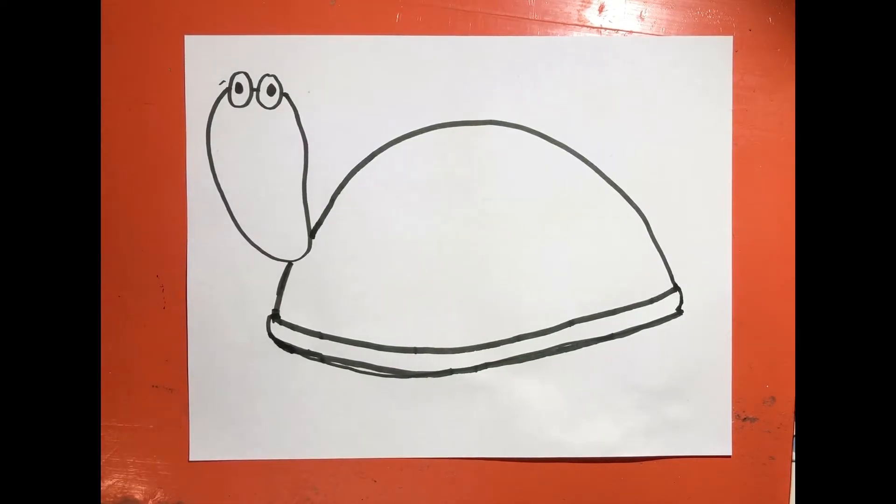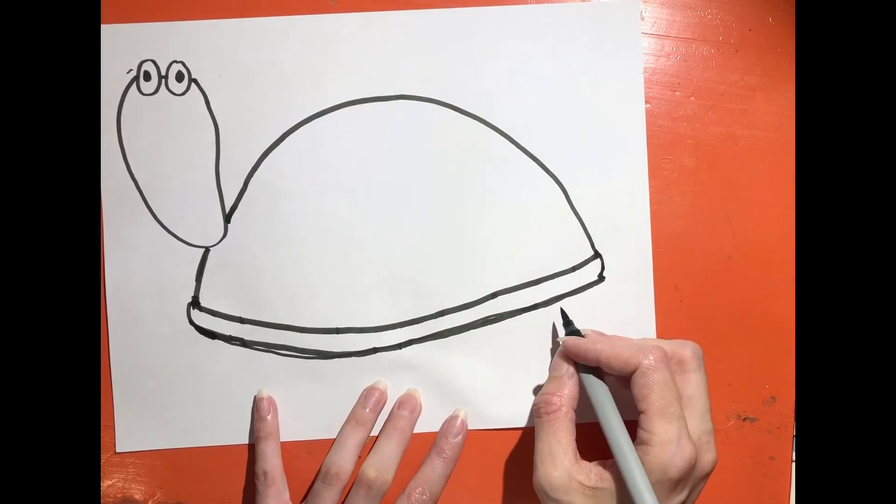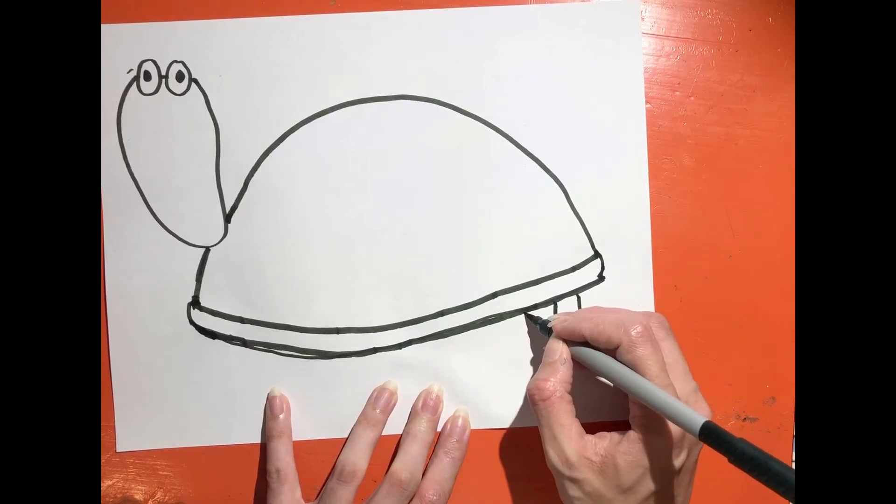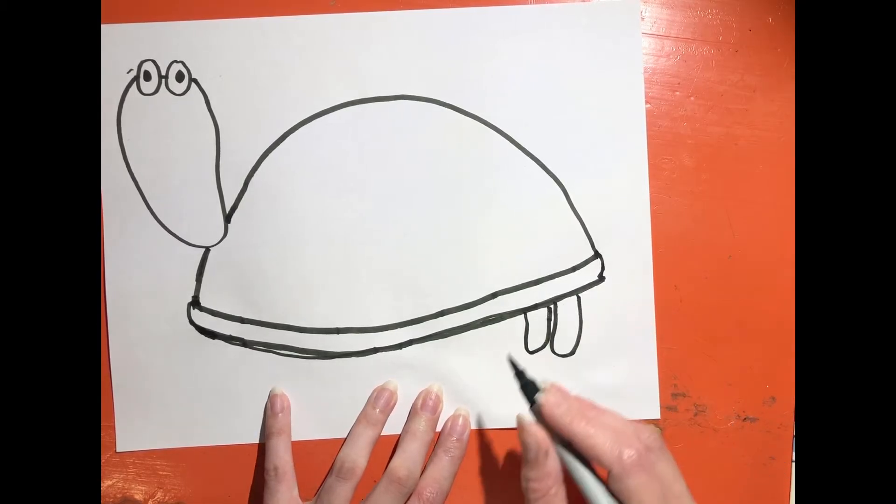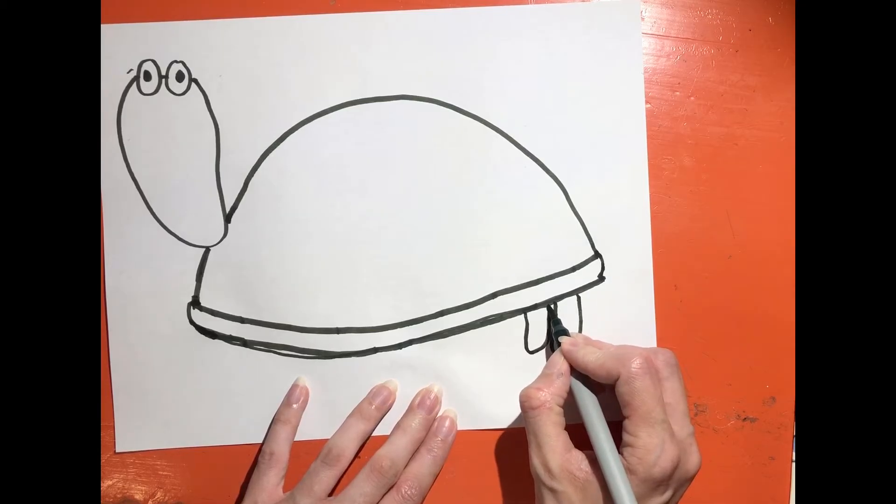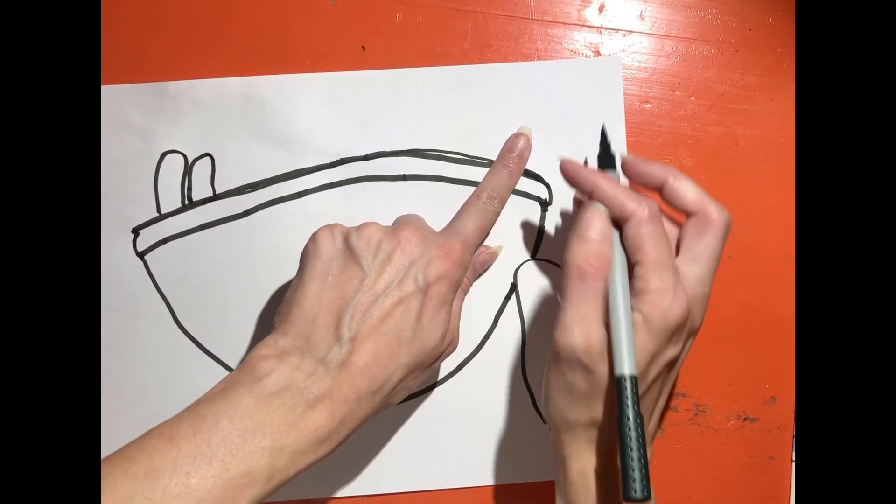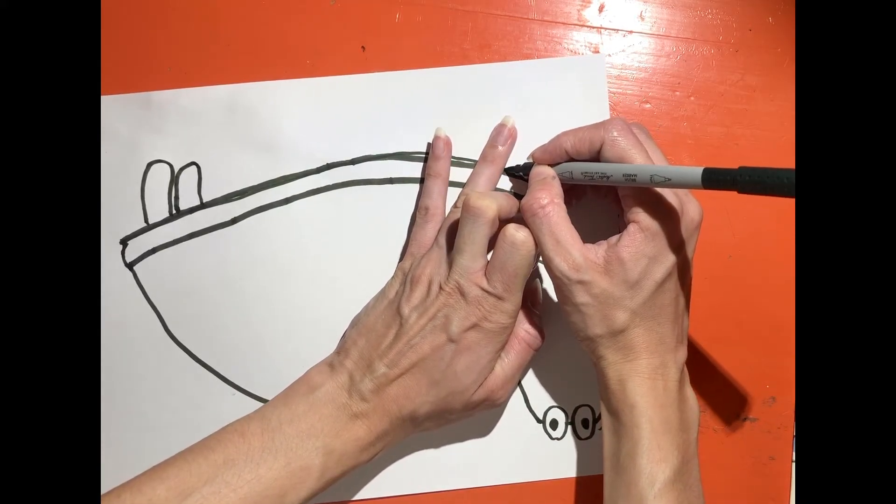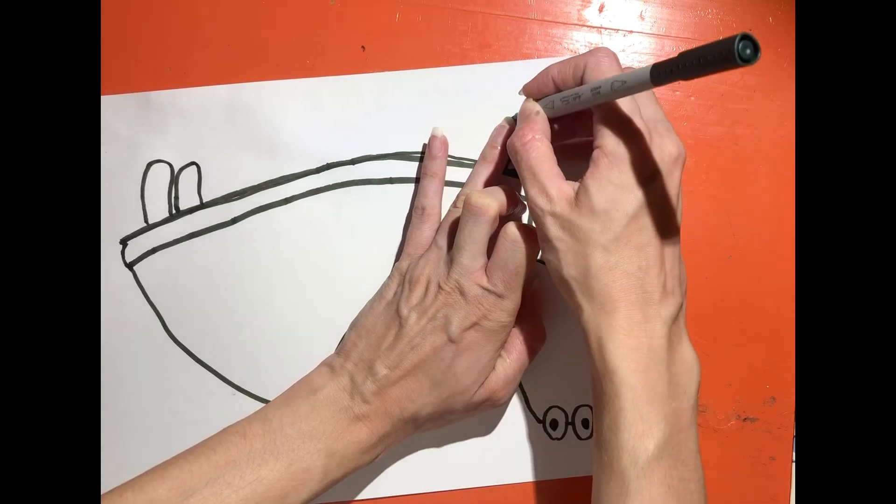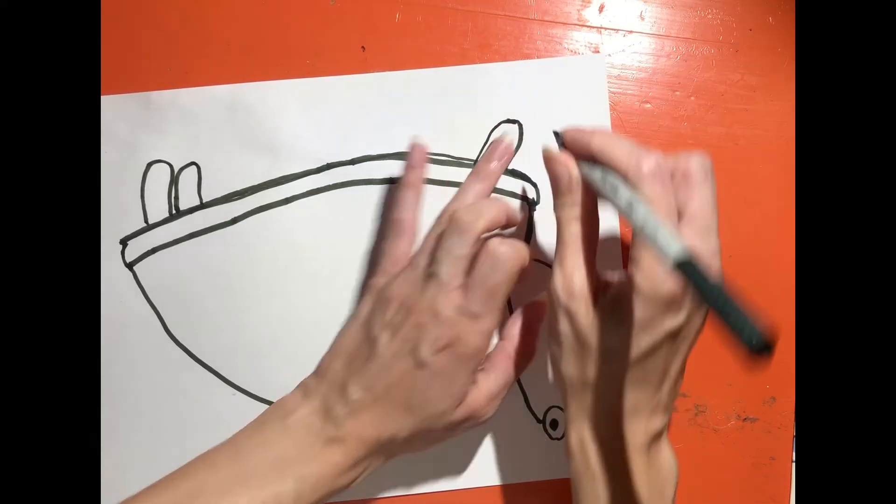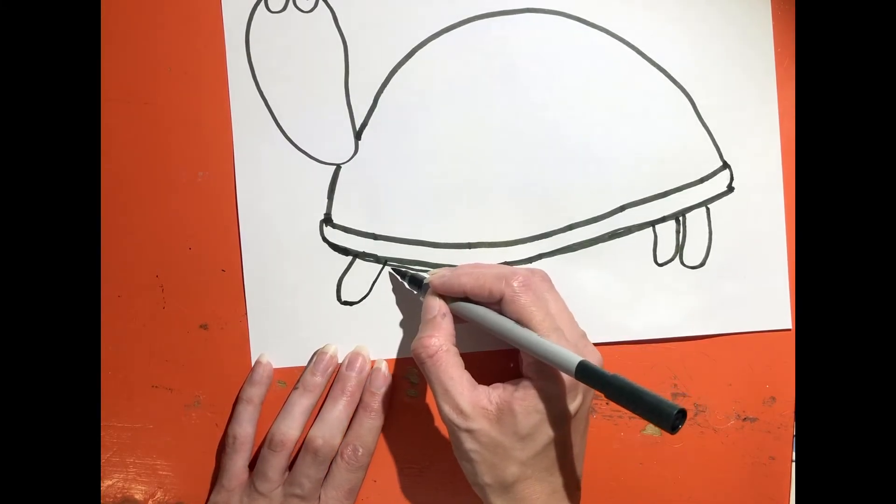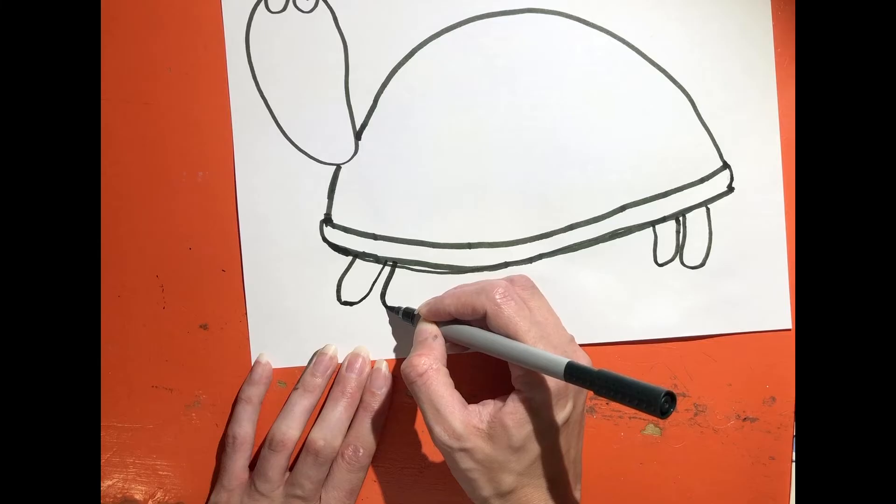Now we're going to give our turtle four little feet. So I'll start on this side and just give him one foot and another foot. If you want to, you can flip your paper upside down and trace your finger to help you make a foot. But you don't have to do it that way. But it works pretty well. And we need one more foot.